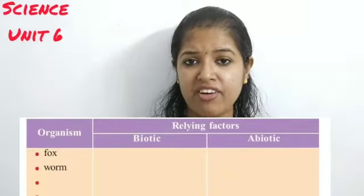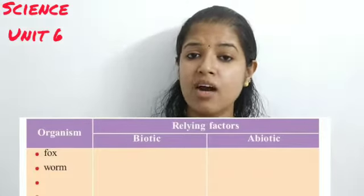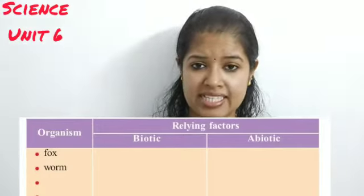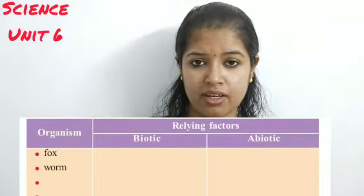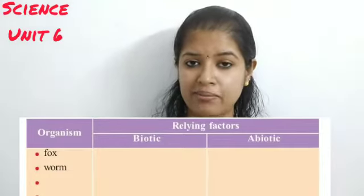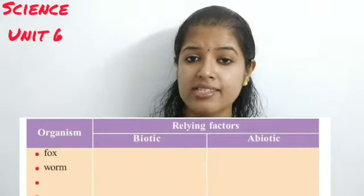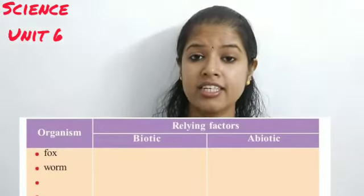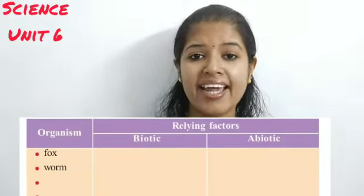First, they have given fox. Fox eats hen and rabbit, and the abiotic factors are water and air. Worm eats small insects and plants, and also requires water and air. You can also include other animals like lion — it eats fox and deer, and requires abiotic factors like water and air. Then snake — it eats frog and small birds, and also requires water and air as abiotic factors. You can write this in your textbook.